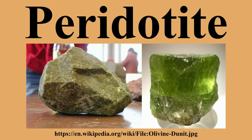Peridotite is a dense, coarse-grained igneous rock consisting mostly of the minerals olivine and pyroxene. Peridotite is ultramafic, as the rock contains less than 45% silica. It is high in magnesium, reflecting the high proportions of magnesium-rich olivine.